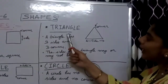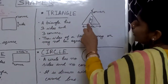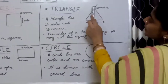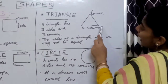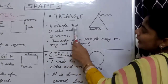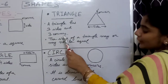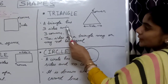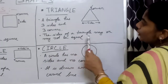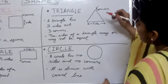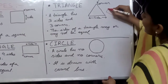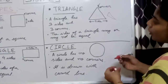Next is triangle. You can see the figure — it is made up of three corners and three sides: one, two, three. So a triangle has three sides and three corners. The sides of a triangle may or may not be equal — the triangle can be different ways.